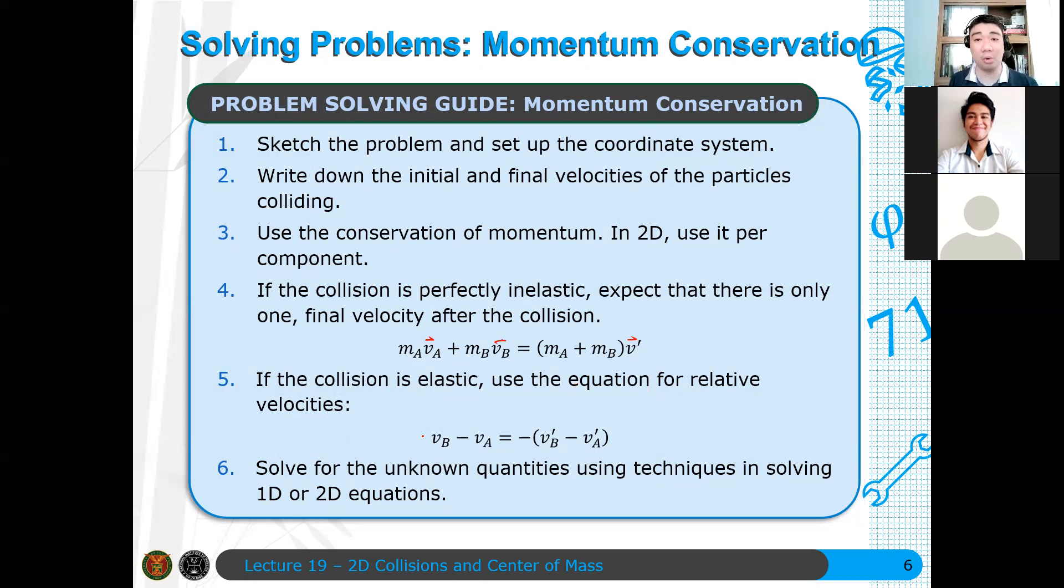Expect that there's only one final velocity or final component of the velocity after the collision. If the collision is elastic, use the equation for relative velocities. If you've watched the supplementary video I uploaded yesterday, I showed how to derive the relative velocities from kinetic energy conservation and conservation of momentum.